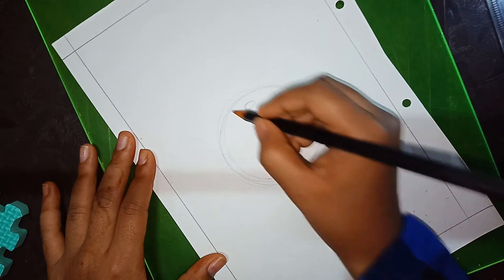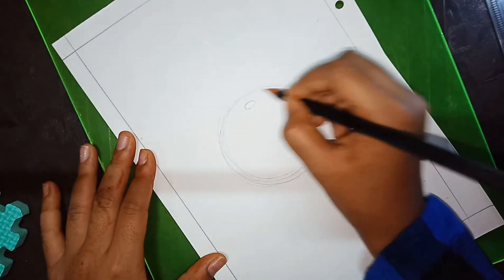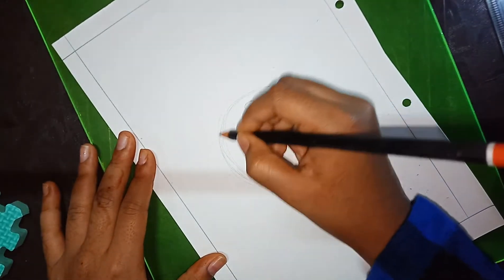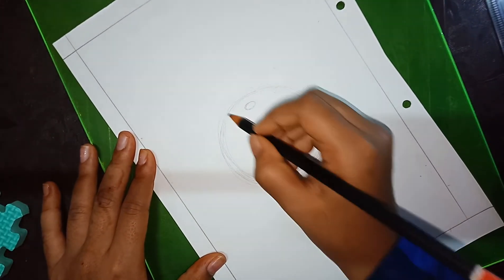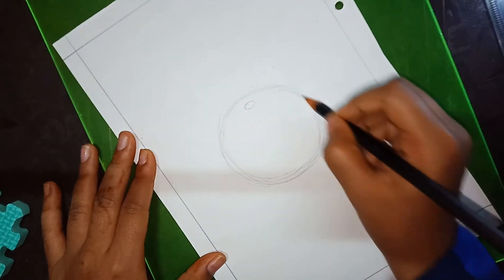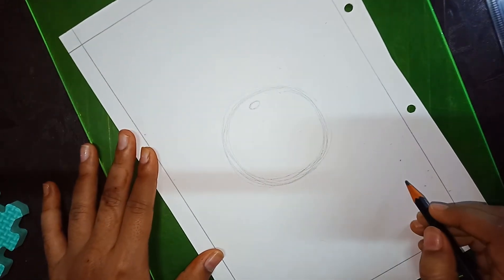Usually it depends on the object kept in front of you, which size and how the object is kept. Now I am drawing as I have kept the object in front of my eye, so our drawing of tomato is ready.